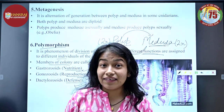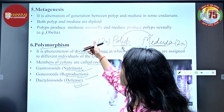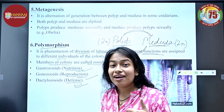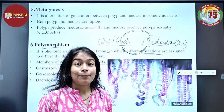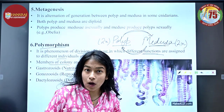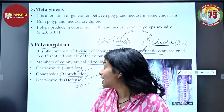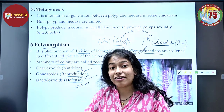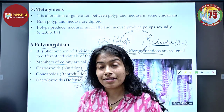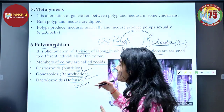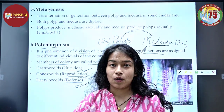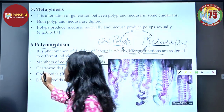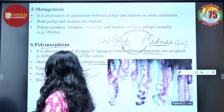Do not confuse polymorphism with metagenesis. Metagenesis is the alternation of generation from polyp to medusa and from medusa to polyp. But polymorphism means that within the polyp or medusa, there are multiple zooids — gastrozoids, gonozooids, and dactylozooids — whose functions of nutrition, reproduction, and defense are assigned to different individuals of the colony.